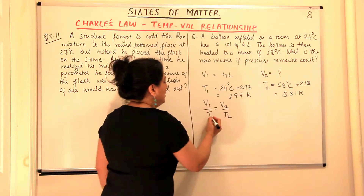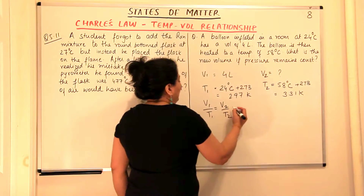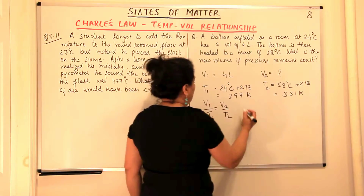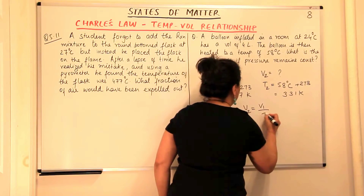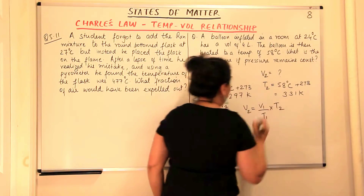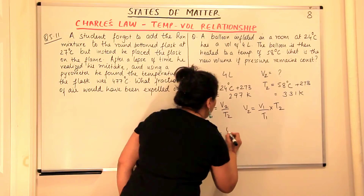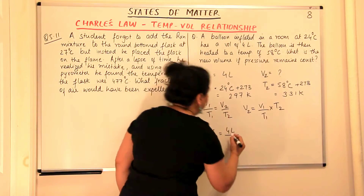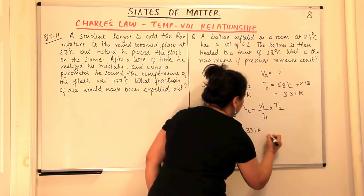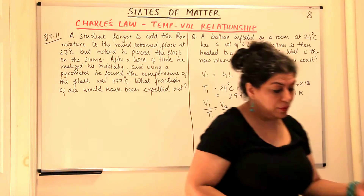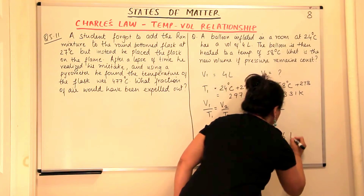So V1 upon T1 is equal to V2 upon T2 and we are looking for V2. Therefore we transfer T2 to the other side. V2 would be equal to V1 upon T1, multiplied by T2. Substituting the values: V2 equals 4 liters upon 297 Kelvin, into 331 Kelvin. When you plug these values into the calculator, the answer you get is 4.46 liters.